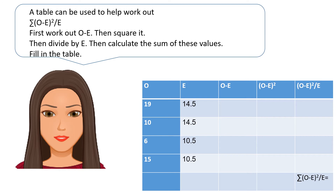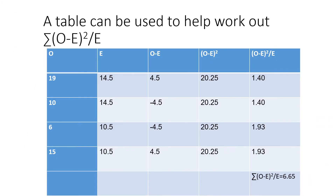Here's a table for you to fill in — pause here and have a go yourself. Here's the table with all the values filled in, and you can see that the overall chi-squared is 6.65. That's the sum of each O minus E squared divided by E.